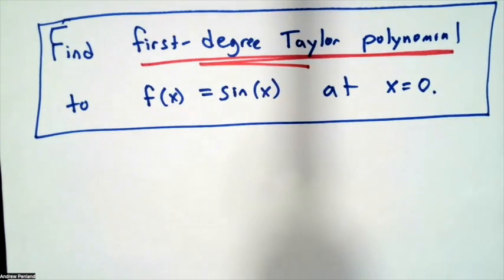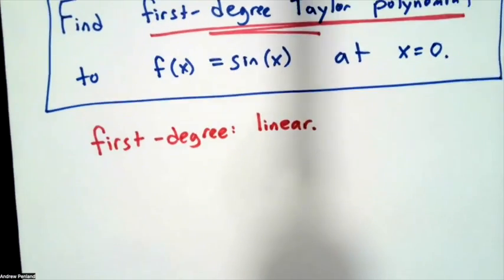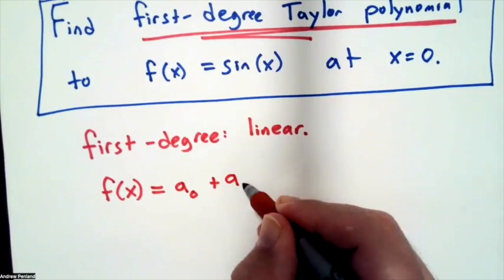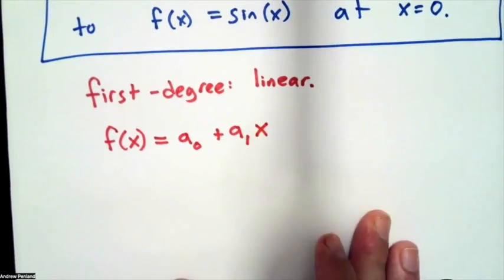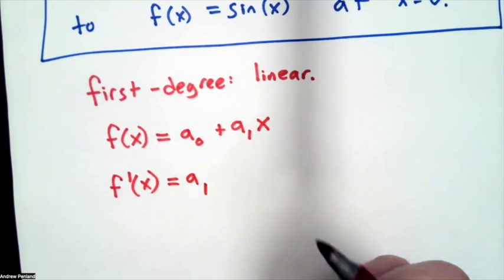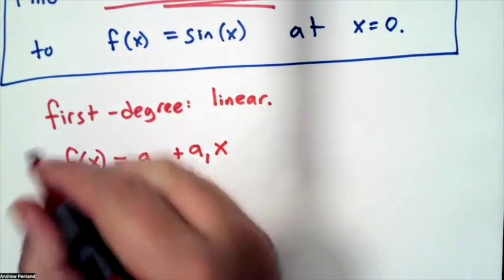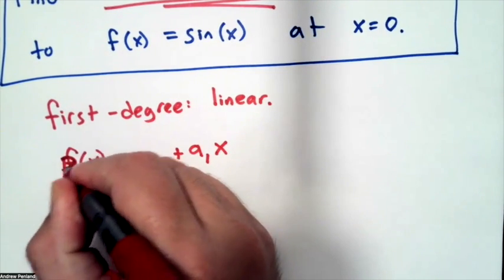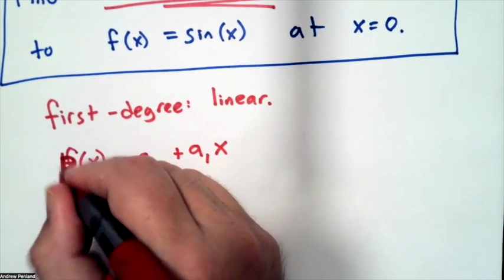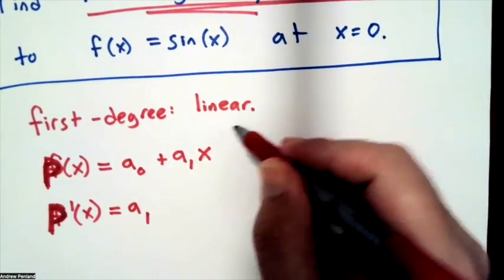Because this is a first degree polynomial, it's going to be linear, so we can write a linear function with two coefficients. Wait, I didn't want to use f, f of x is the original function. What I wanted to use was p, so p for polynomial makes more sense. I have p of x is equal to a sub zero plus a sub one times x, so p prime of x is equal to a sub one.